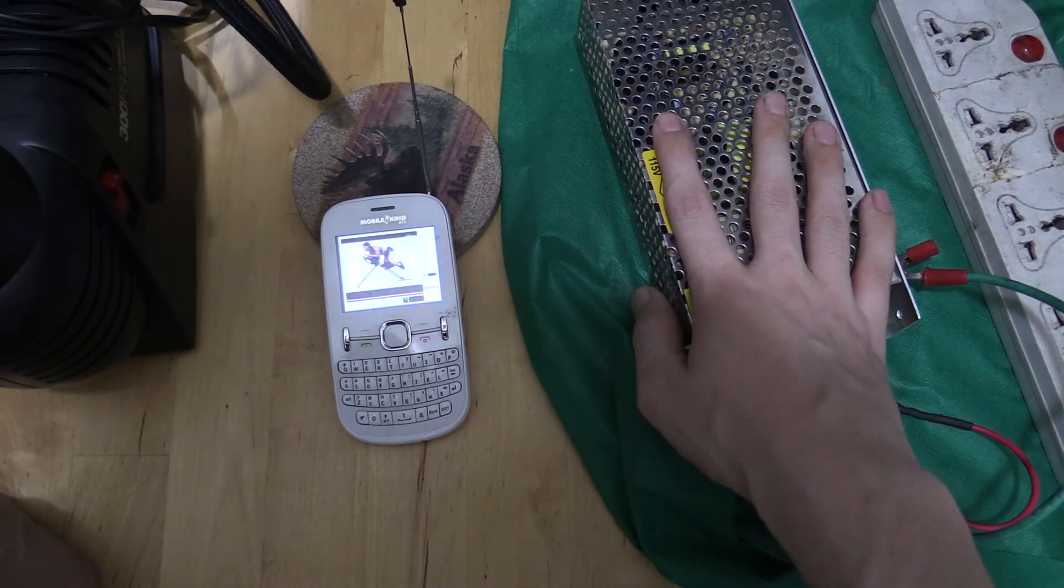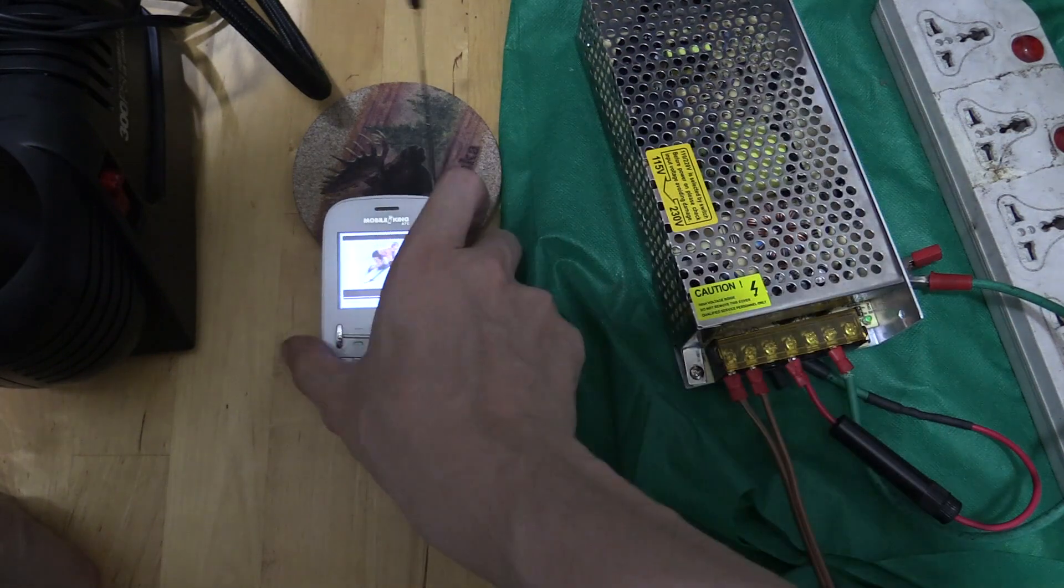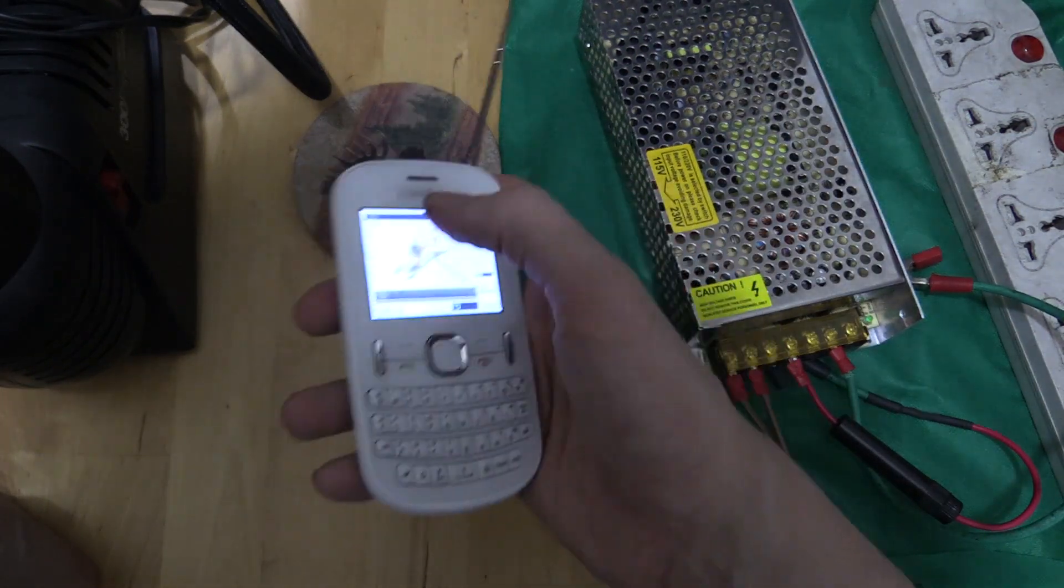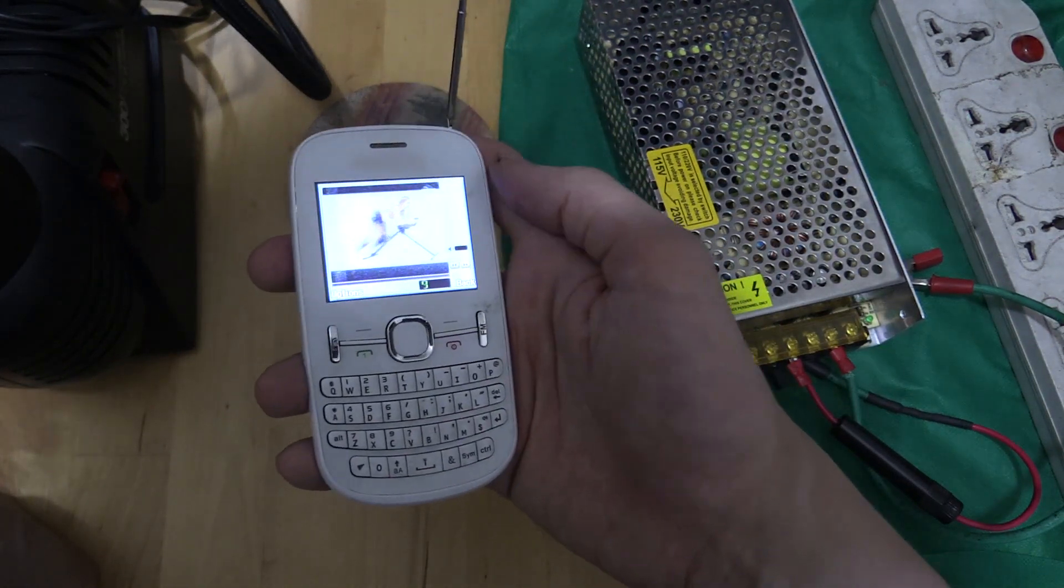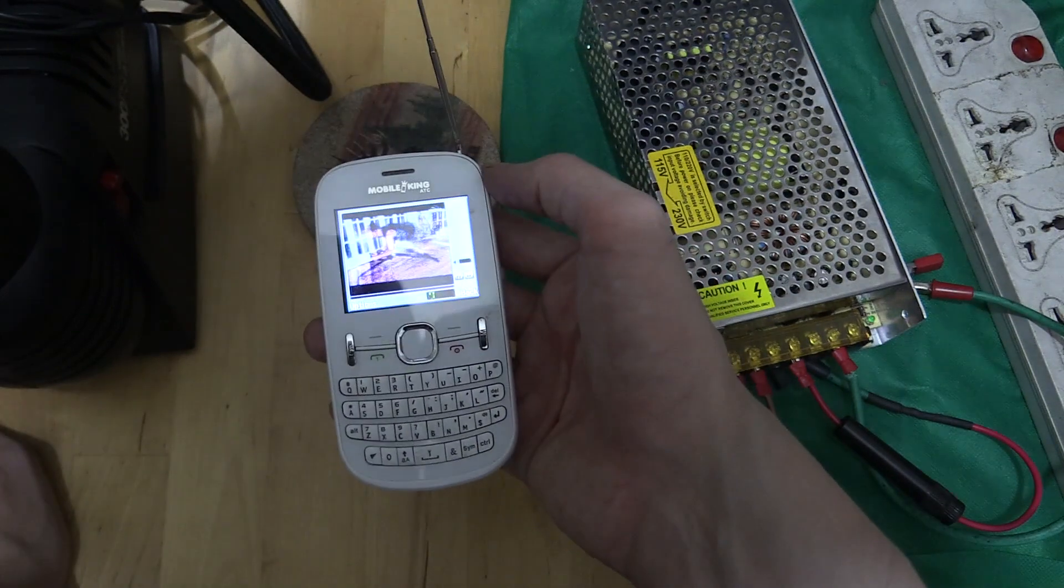So I don't really have any CB radio stuff, but I have this phone from CDR King or Mobile King, which is their phone branch, which has a TV receiver in.